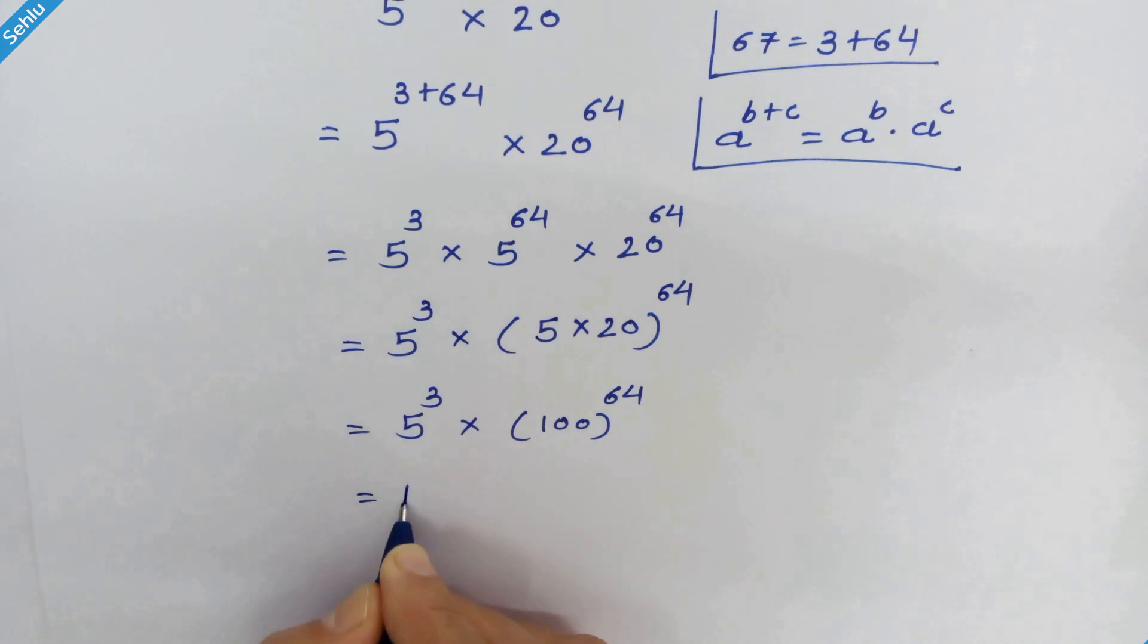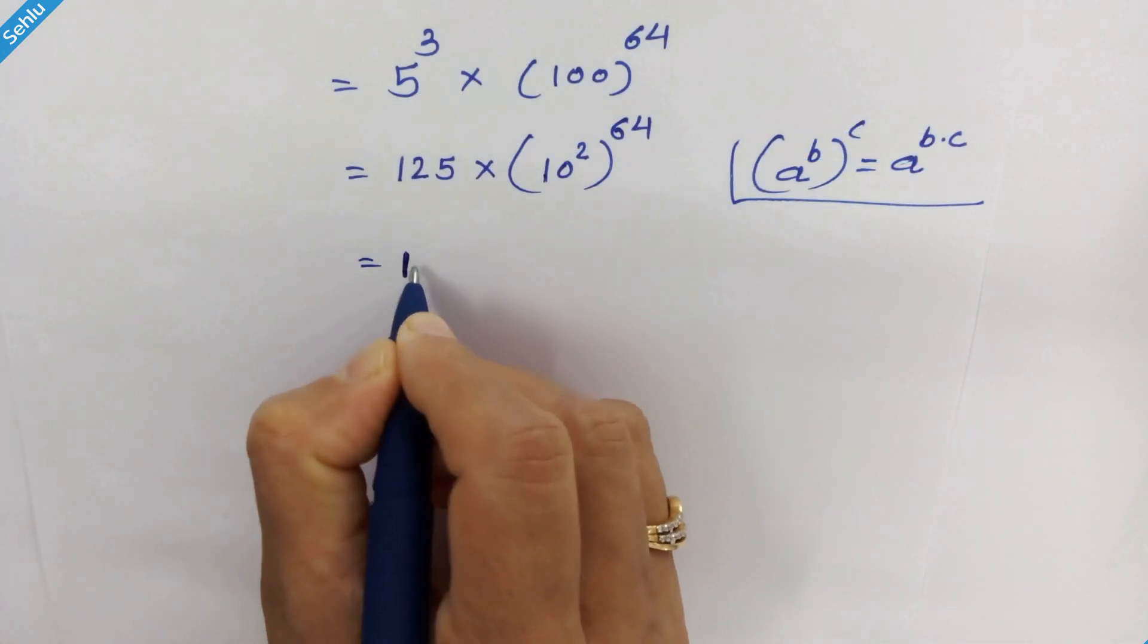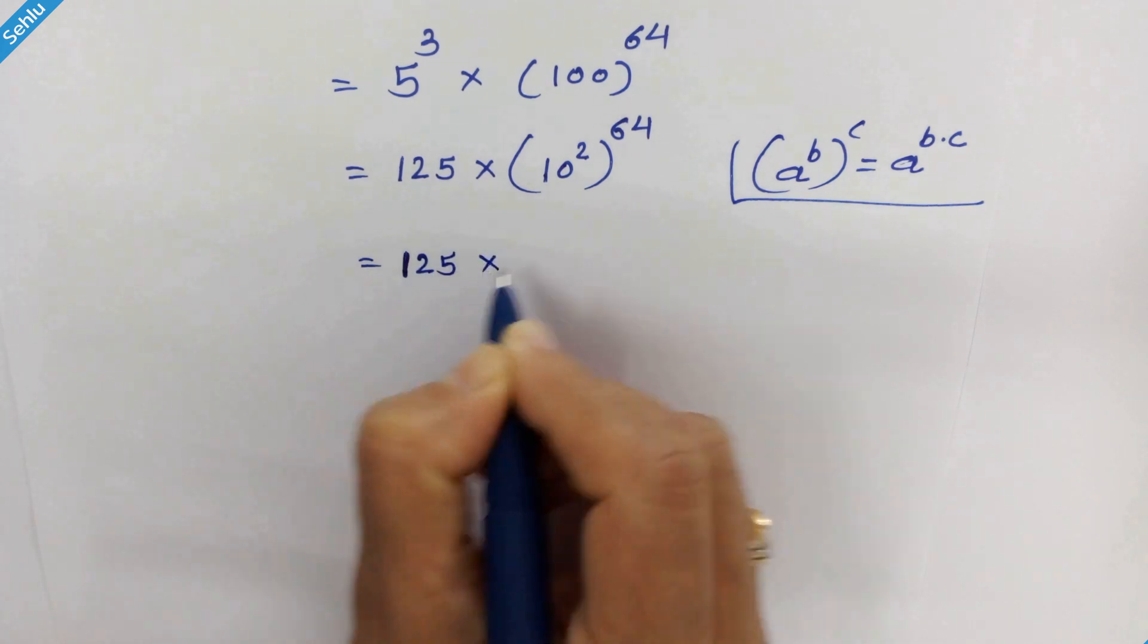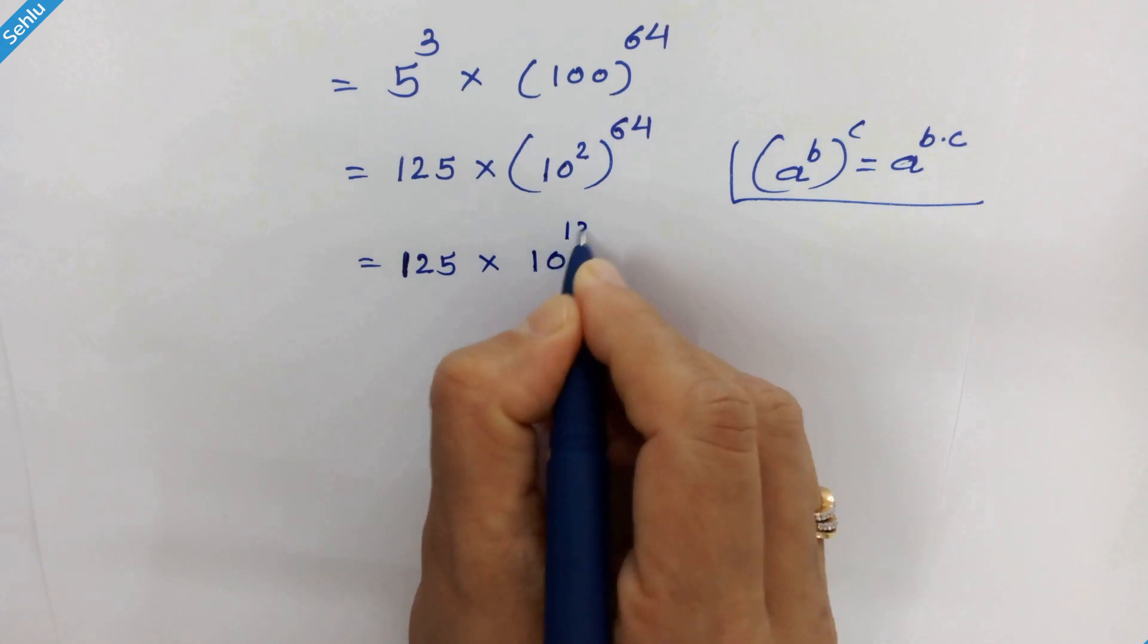5 cube is 125 times 100 is 10 square. So we can write like this 10 square whole raise to 64. So as we know, if we have a raise to b whole raise to c, then it will be a raise to b times c. So according to this rule, these two can multiply. So in the next step, we have 125 times 10 raise to 2 times 64 is 128.